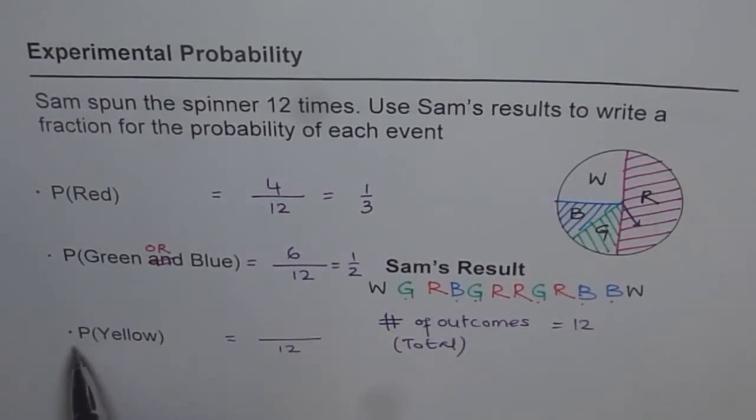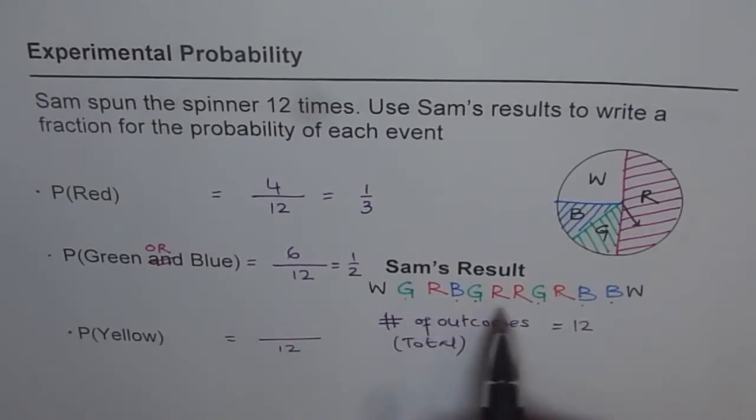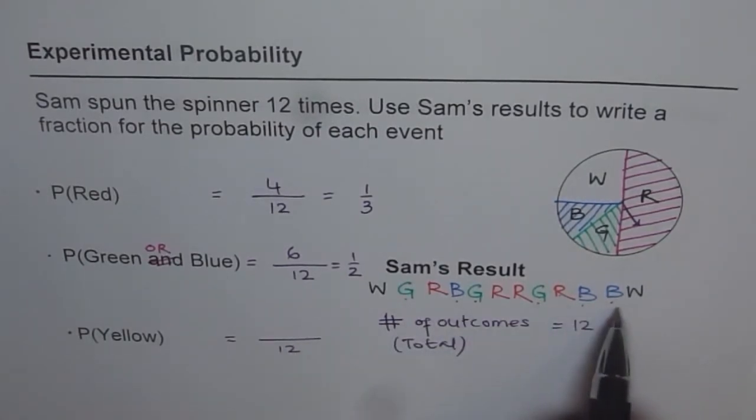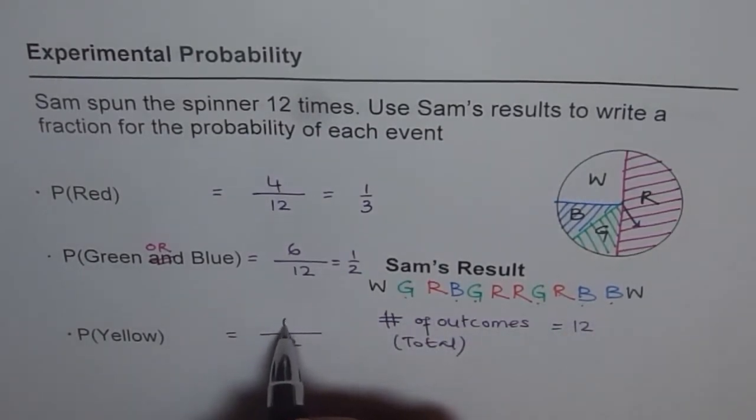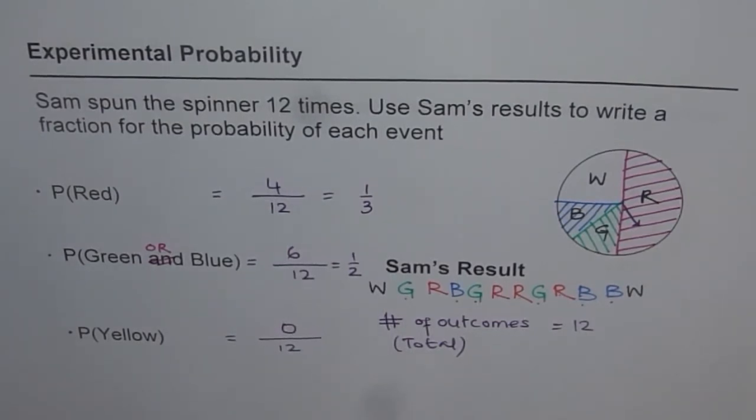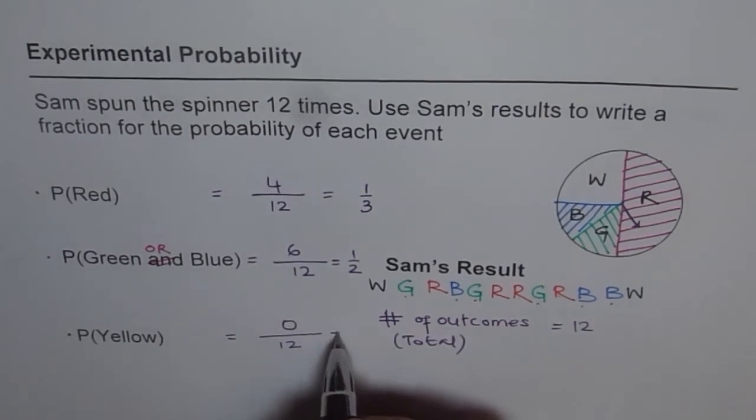How about yellow? Probability of getting yellow from Sam's results. Is there any yellow here? No. So it is 0. So that is impossible. The spinner does not have that color. So it is just 0.